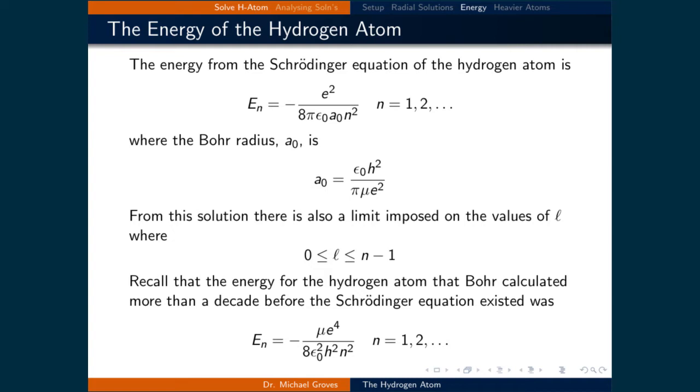Recall that the energy for the hydrogen atom that Bohr calculated more than a decade before the Schrödinger equation existed was negative mu e to the power of 4 divided by 8 epsilon naught squared h squared n squared, again where n is equal to a positive integer.